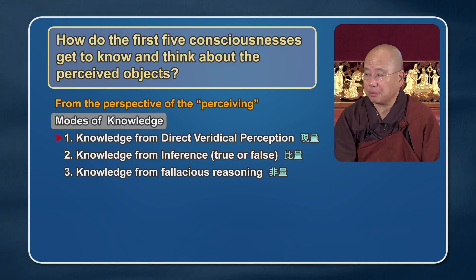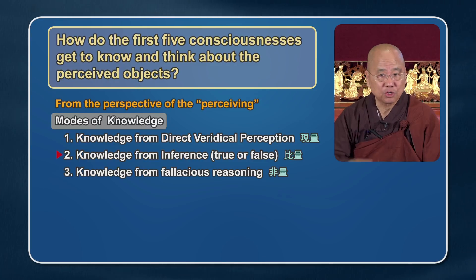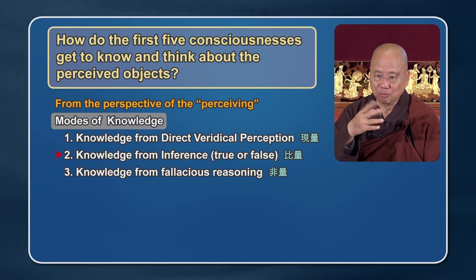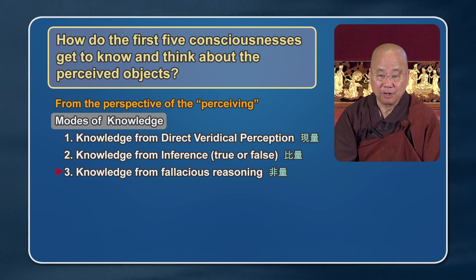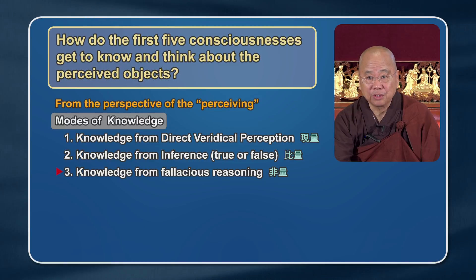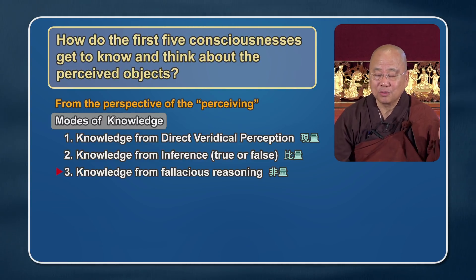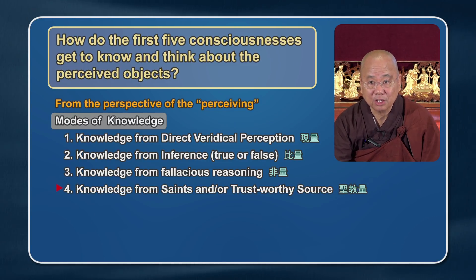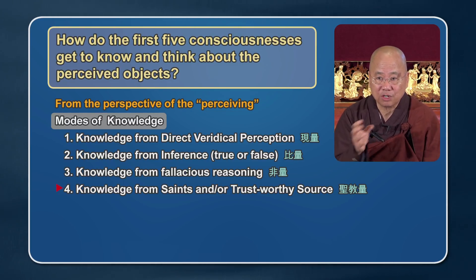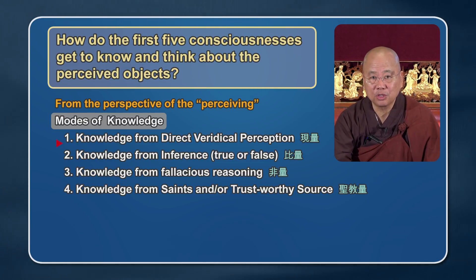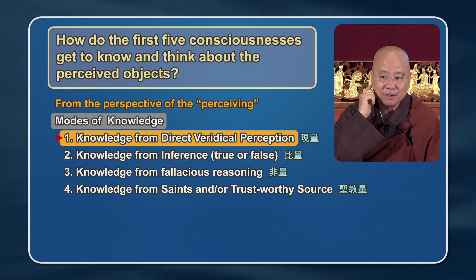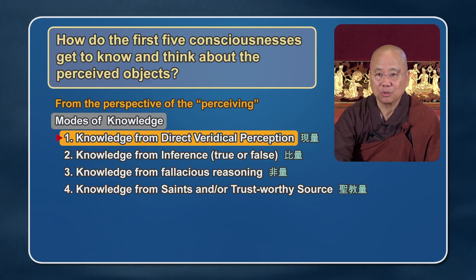Knowledge from direct veridical perception, knowledge from inference — whether true, maybe true, or maybe false — from postulations, analysis, and inference. Third, knowledge from fallacious reasoning: if the inference is true, it's true; if false, it's fallacious. There's also a fourth: knowledge from saints and trustworthy sources. The first five consciousnesses fall into knowledge from direct veridical perception — they know by actually seeing, listening, tasting — from actual perception.